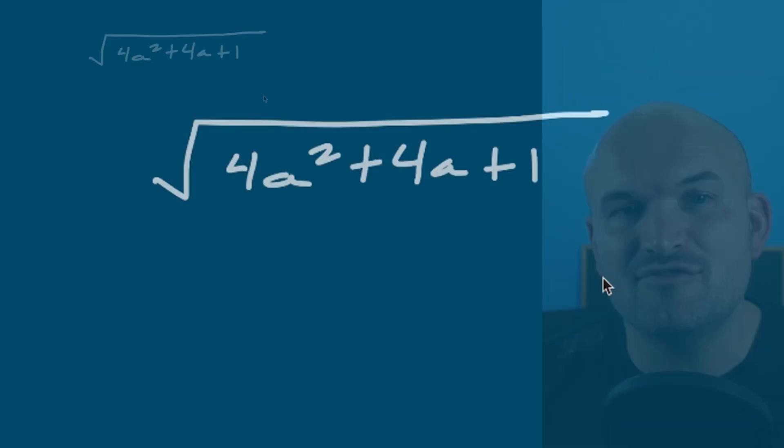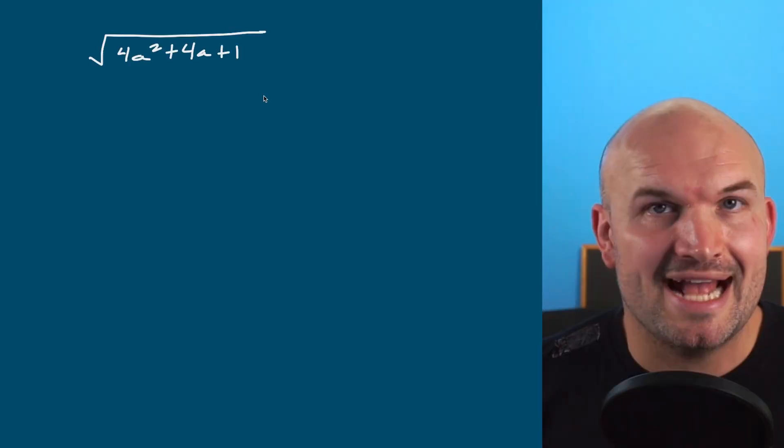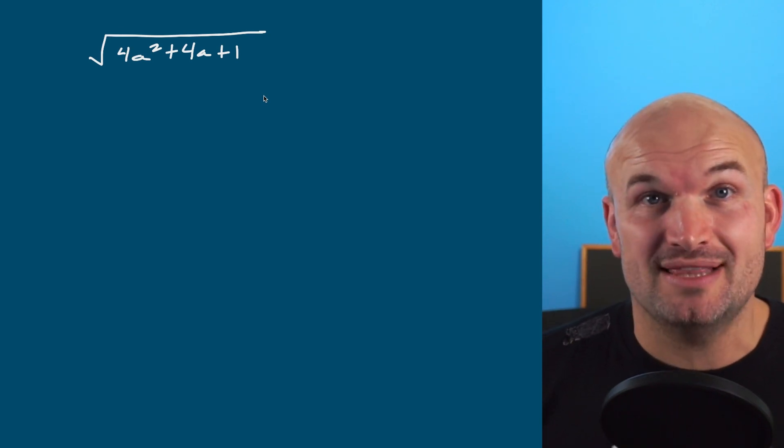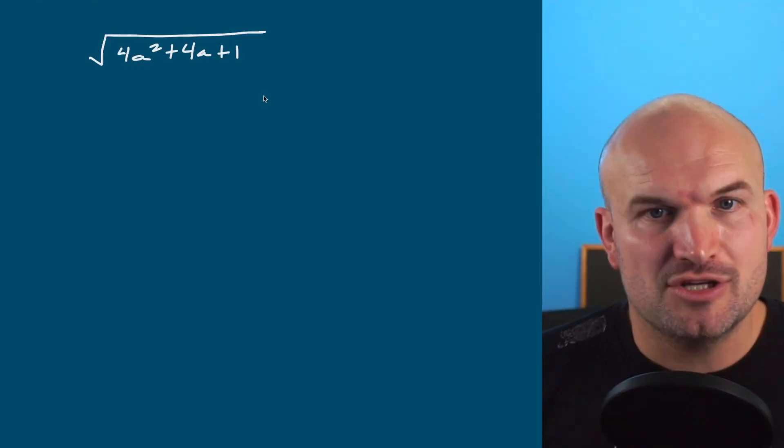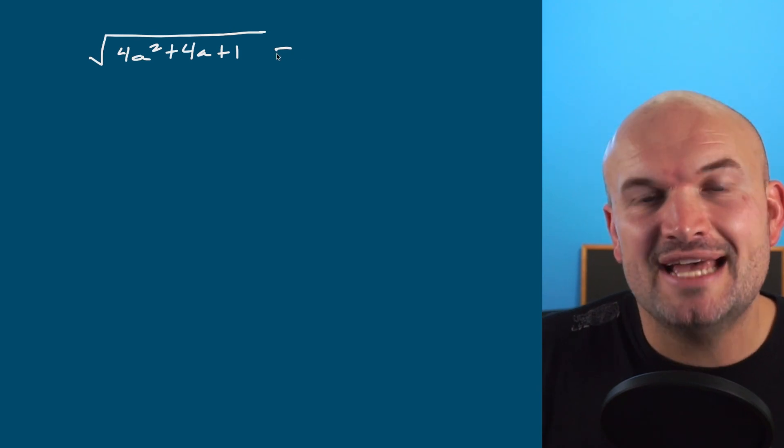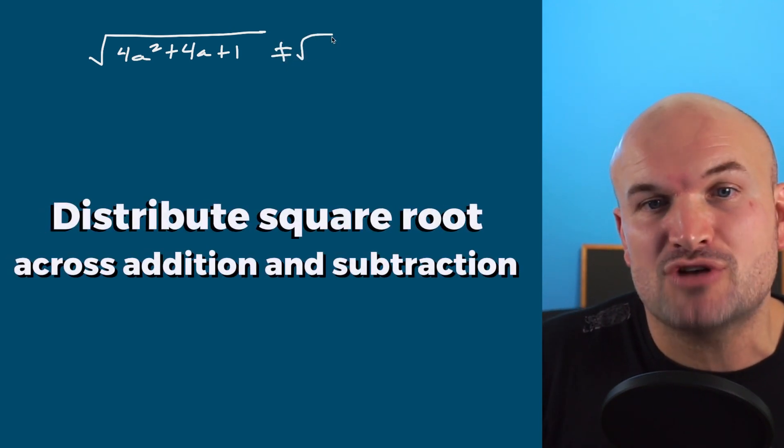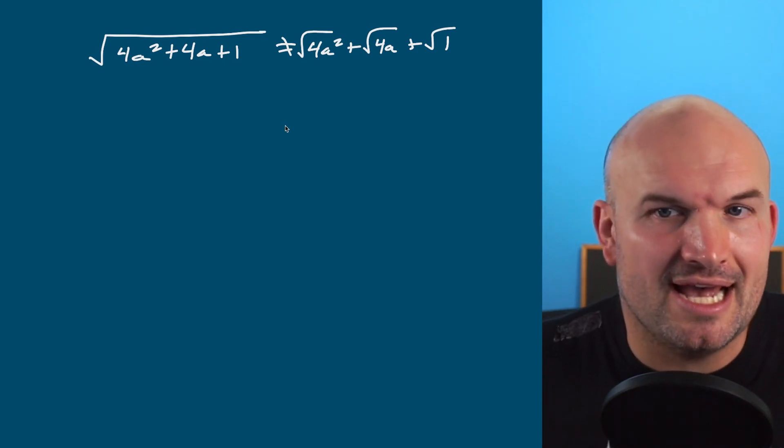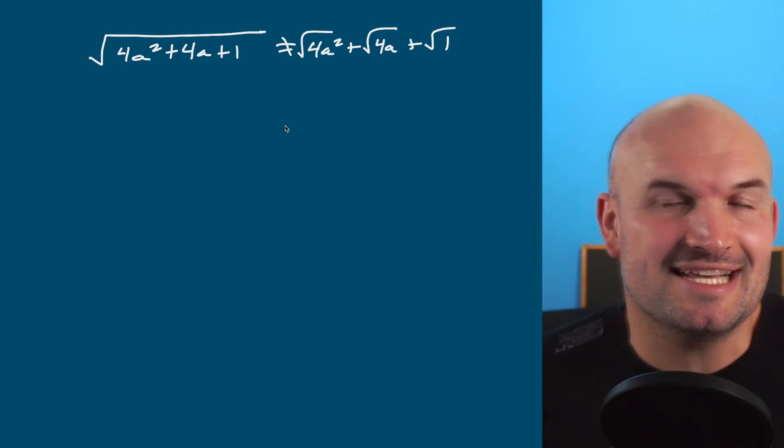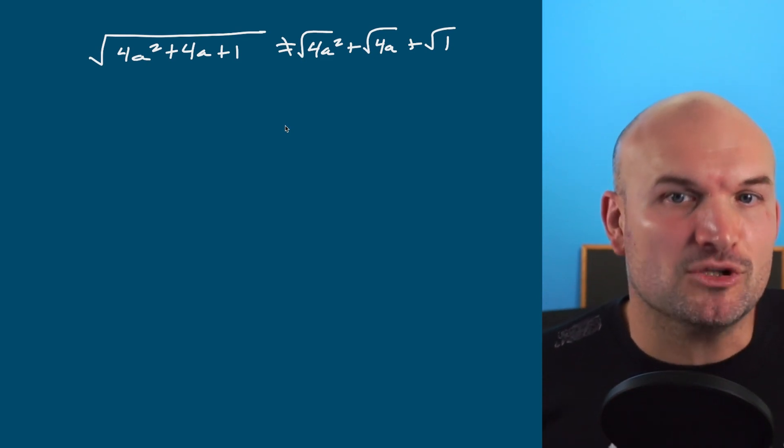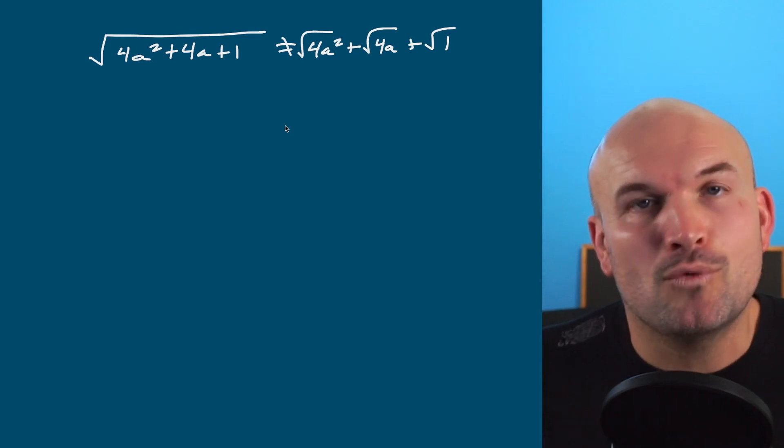Now in this first example, I have the square root of 4a squared plus 4a plus 1. If students are kind of struggling or they maybe kind of forgot, they'll see the 4 and the a squared and they recognize, hey, I can take the square root of those numbers in addition to the number 1. So what they'll simply do is one of the more common mistakes - they'll distribute the square root across addition and subtraction. But it doesn't work like that.